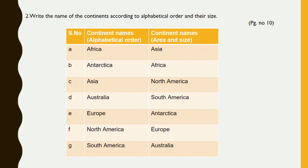Now arranging the continents by area and size, from largest to smallest: Asia, Africa, North America, South America, Antarctica, Europe, Australia.